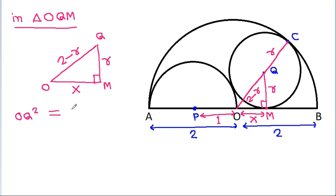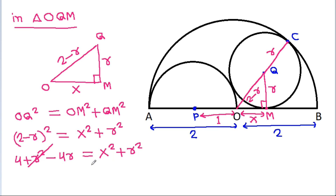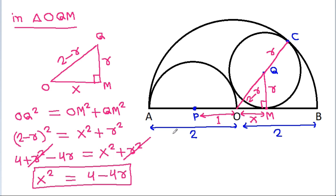OQ squared equals OM squared plus QM squared. OQ is 2 minus R, and QM is R. Also, OM is 2 minus OQ. Expanding, x squared equals 4 minus 4R.